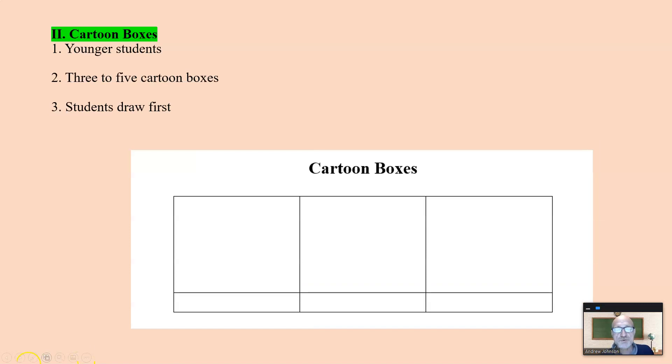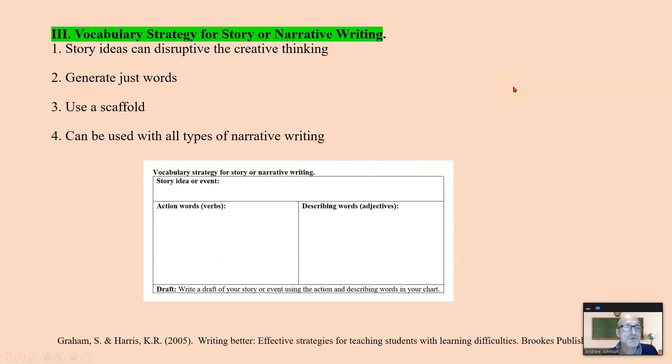Same with cartoon boxes. This is for preschool, kindergarten, first grade. Draw the picture first, then describe what's happening using temporary spelling or writing. Or an adult says what's going on here and writes in the boxes. And students can reread their story, their personal narrative.